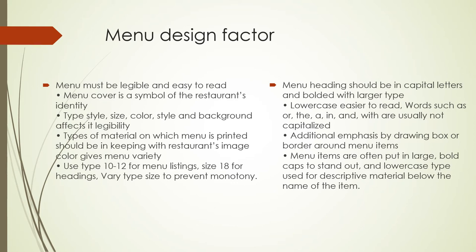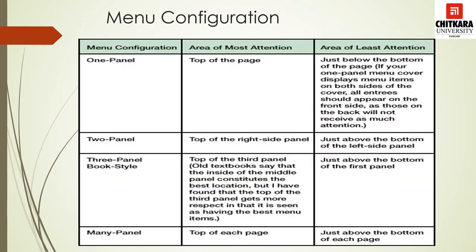When we talk about different types of menu configurations, they are divided into three columns — menu configurations, area of most attention, and area of least attention — and there are four rows. A menu card could be in one panel, two panel, three book panel style, or many panels. These are the four different configurations of the menu card.